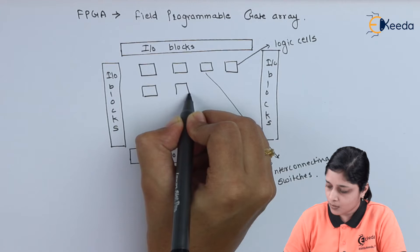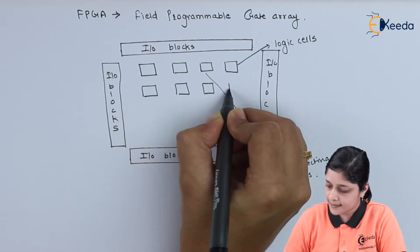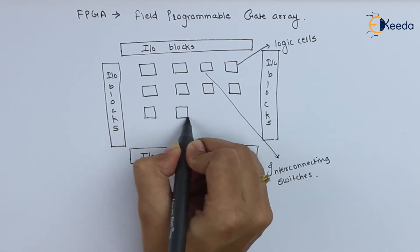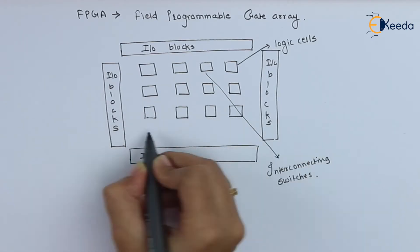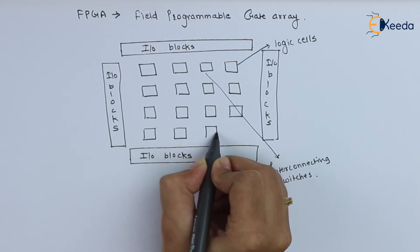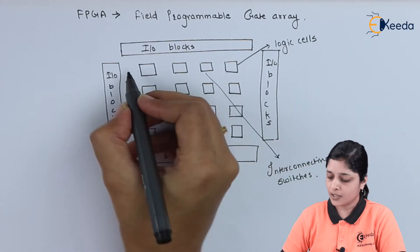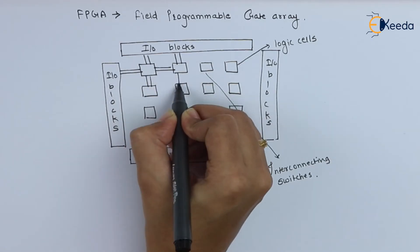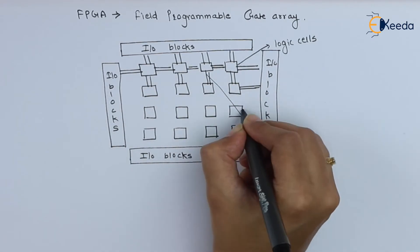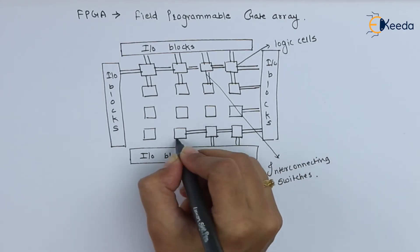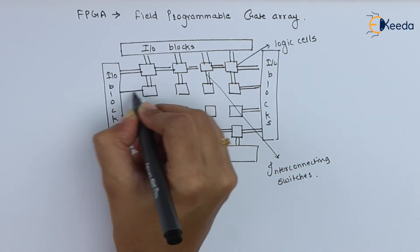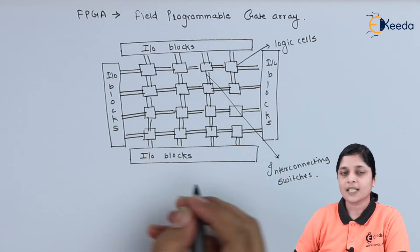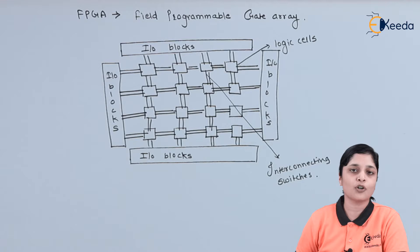So we will draw logic cells and interconnecting switches alternately. We have to show here the interconnection between each and every block. So this becomes the block diagram for FPGA.